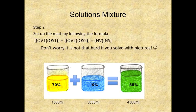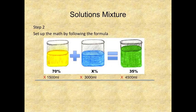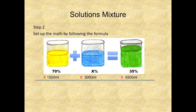Step 2. Set up the math by following the formula. In our case we're going to do pictures so you understand the formula a little better and then later on you can fill in the formula yourself. Step 2 continued. We are setting up the math with pictures. So the formula states old strength 1 times old volume 1, that is 70 times 1,500, plus old strength 2 times old volume 2, that is x times 3,000, equals your new strength times your new volume, in this case 35 times 4,500.